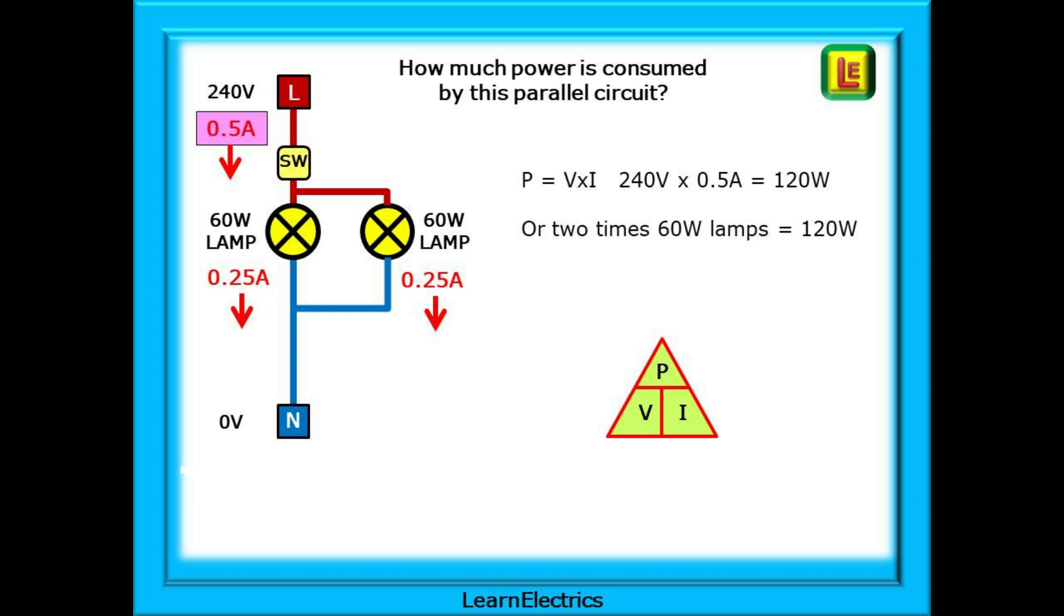Now we can calculate the power. We've already made these calculations for the single lamp, and so we can reuse the data that we calculated. P is equal to voltage times current, and we know that 0.25 amps flows through a 60 watt lamp. So 240 volts times 0.5 amps is 120 watts. Or we could simply have said that as we have two 60 watt lamps, two times 60 watts is 120 watts.